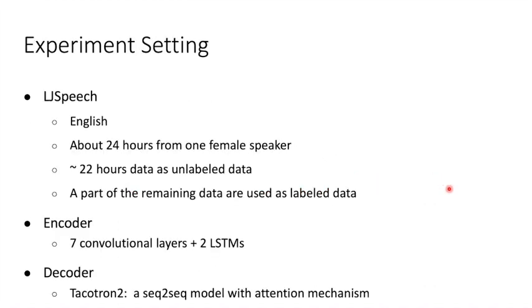Okay, so let's move on to the experiment section. The dataset we use in this work is LJSpeech. It is an English dataset from a single female speaker. It has about 24 hours data, and we use about 22 hours data from it as the unlabeled data. A part of the remaining data are used as the labeled data. The encoder of our framework is composed of seven convolutional layers plus two LSTMs. The decoder is the Tacotron 2 model, which is the sequence-to-sequence model with the attention mechanism.